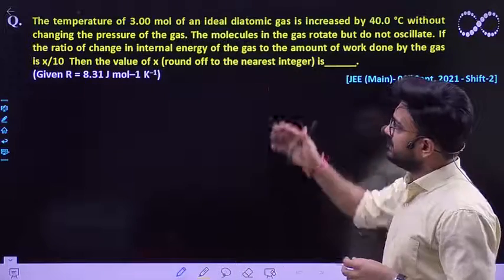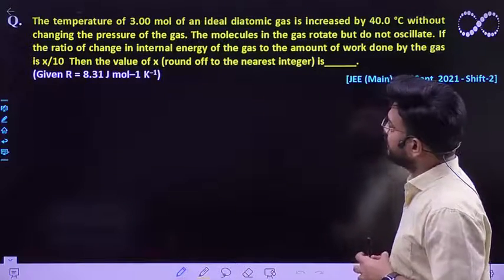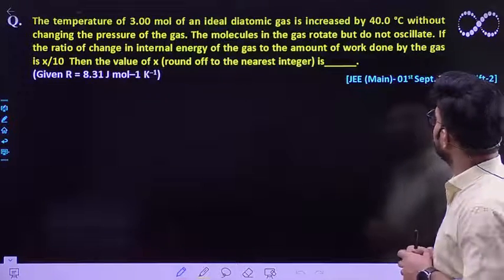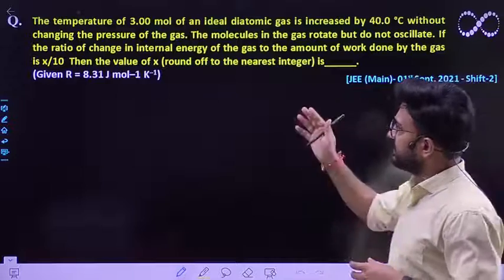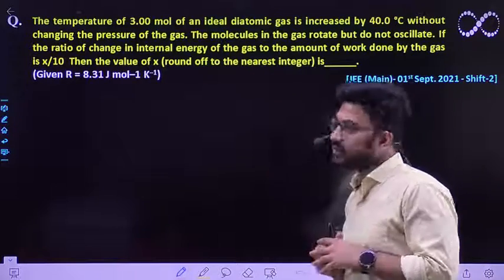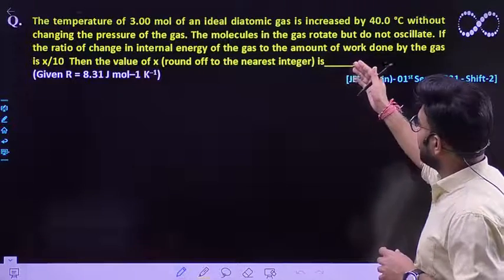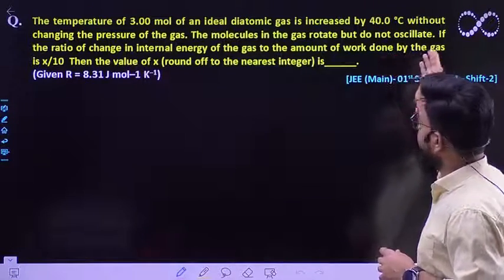Question says, the temperature of 3 mole of an ideal diatomic gas is increased by 40 degree centigrade without changing the pressure of the gas. So that means it is an isobaric process that we already know because the pressure remains constant. The molecules in the gas rotate but do not oscillate.